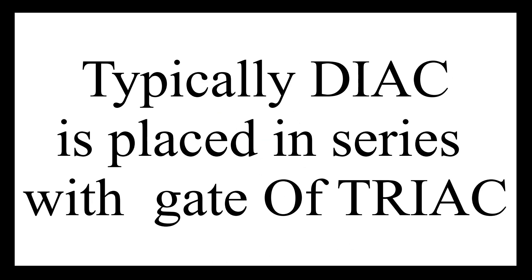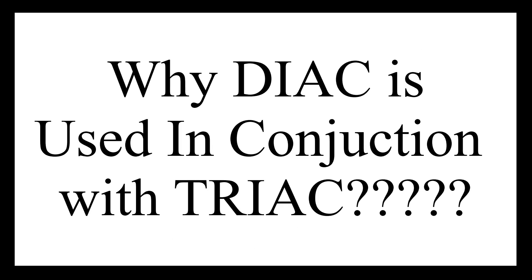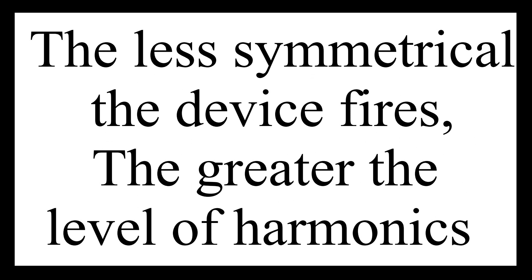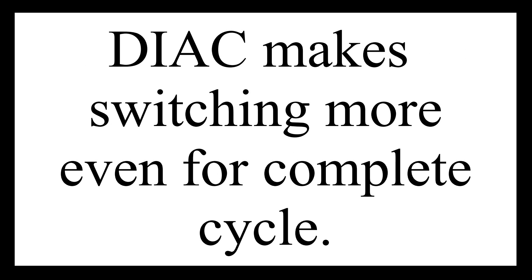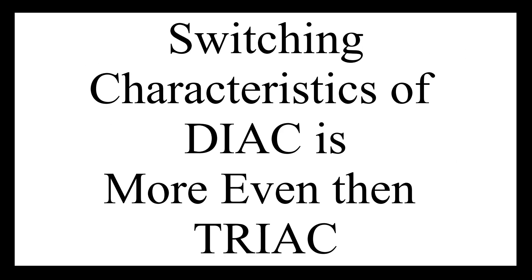Typically the DIAC is placed in series with the gate of a triac. DIACs are often used in conjunction with triacs because these devices do not fire symmetrically due to slight differences between the two halves of the device. This results in harmonics being generated, and the less symmetrical the device fires, the greater the level of harmonics produced. It is generally undesirable to have high levels of harmonics in a power system. To help overcome this problem, a DIAC is placed in series with the gate, making the switching more even for both halves of the cycle. Since the DIAC prevents any gate current from flowing until the trigger voltage reaches a certain level in either direction, this makes the firing point of the triac more even in both directions.